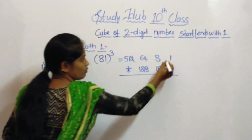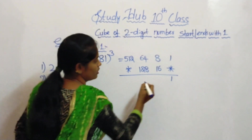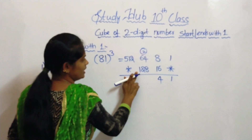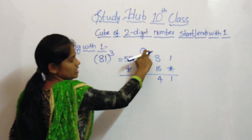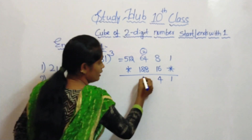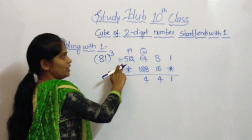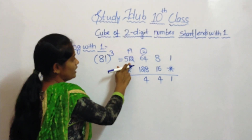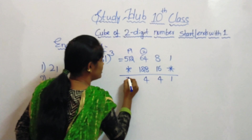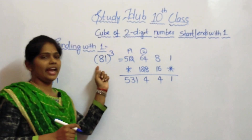Now add: 1. 16 plus 8 is 24 — write 4 here and carry 2. 128 plus 2 is 130, plus 64 is 194 — write 4 here and carry 19. Now 512 plus 19: 522 plus 9 is 531. This is the cube of the number 81.